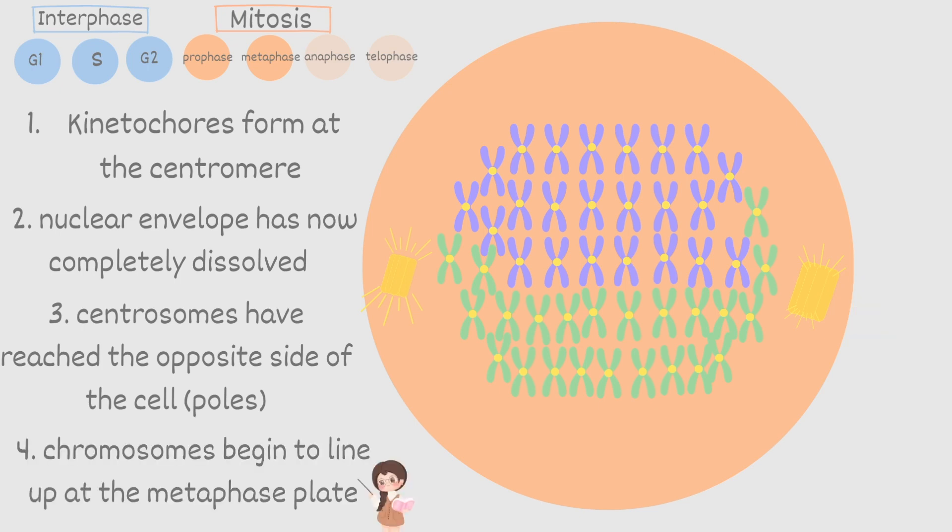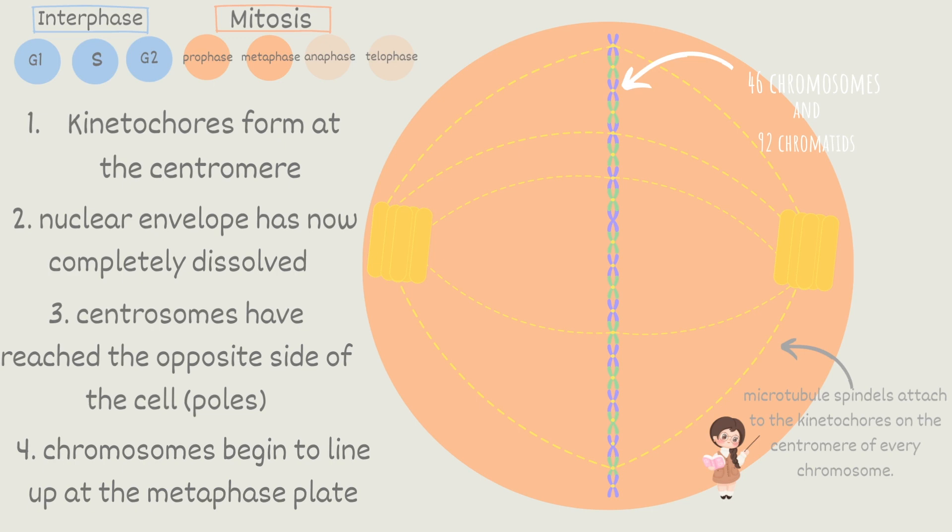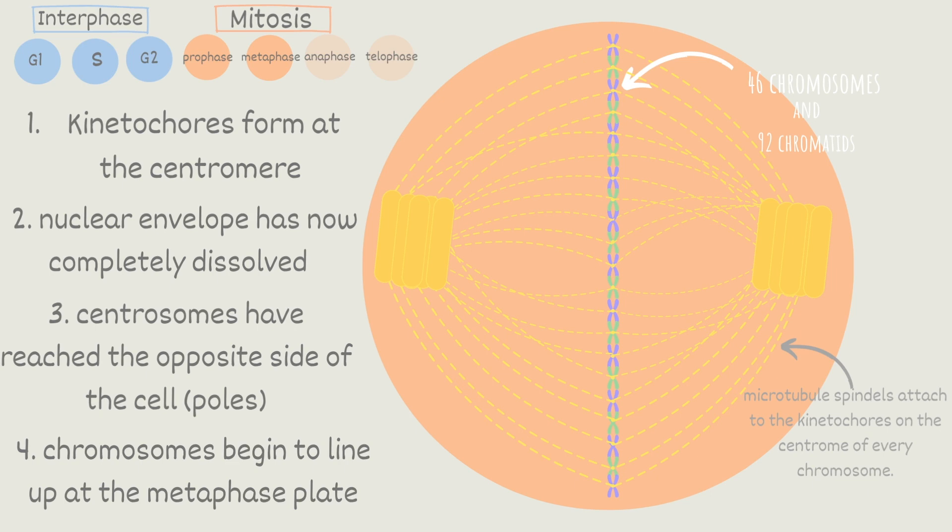Lastly and probably the most important the chromosomes begin to line up at the metaphase plate. So all 46 chromosomes and 92 chromatids that make up those chromosomes will line up. This is the metaphase plate by the way. And along with those chromosomes lining up at the same time the microtubule spindles will attach to the kinetochores on the centromere of every single chromosome. So basically the centrosomes have these long arms called microtubules and they will reach out and connect with each kinetochore at the centromere of every single chromosome. Each chromosome should have a microtubule attached to it from each of the centrosomes.